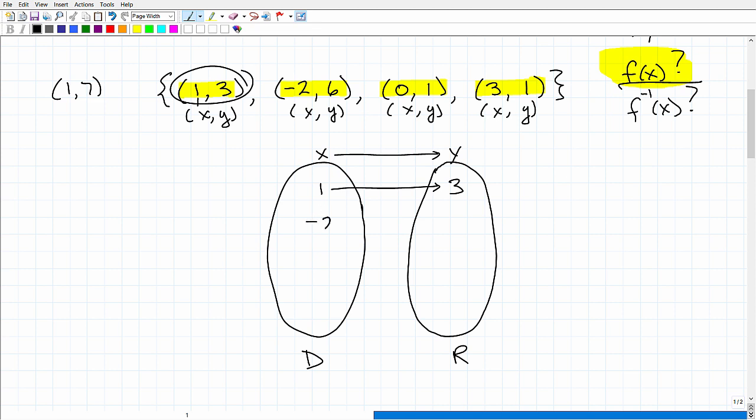All right. So knowing that, let's go ahead and finish out this mapping. So we have negative two maps to six. And by the way, just as I had one mapping to seven, it's the same thing with the Y. So if I have the same Y, okay, I'm just not gonna write that number twice. All right. So negative two maps to six.